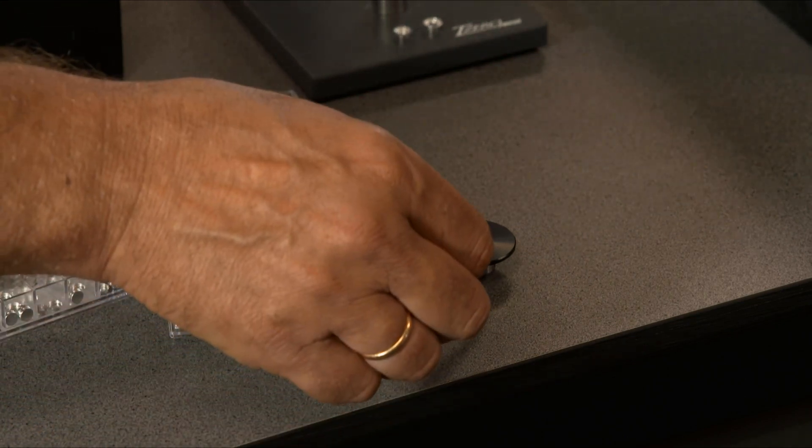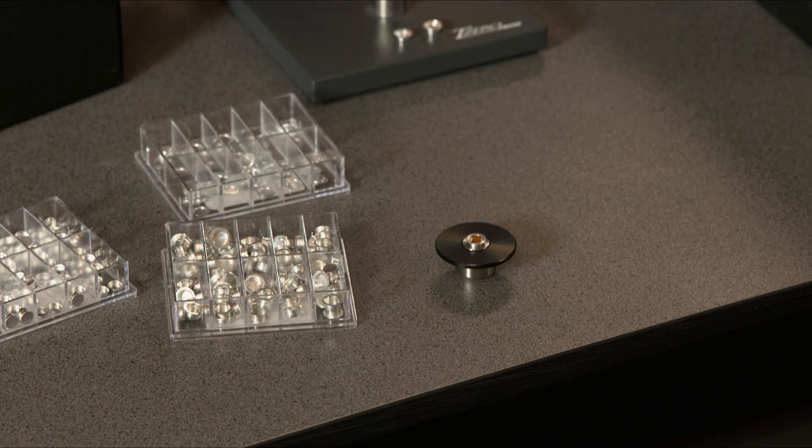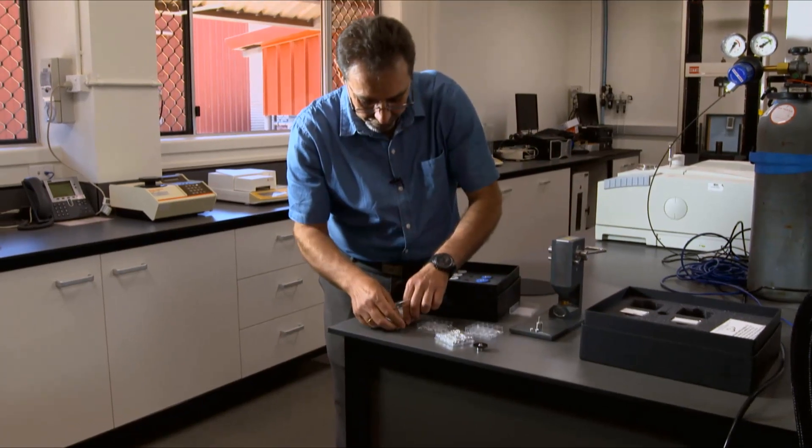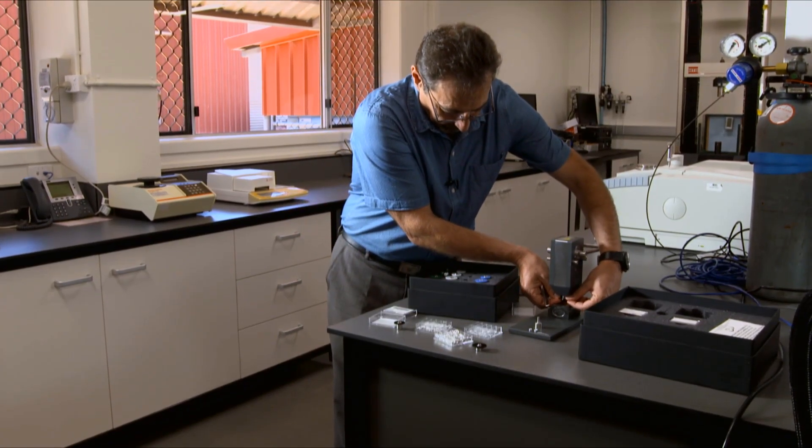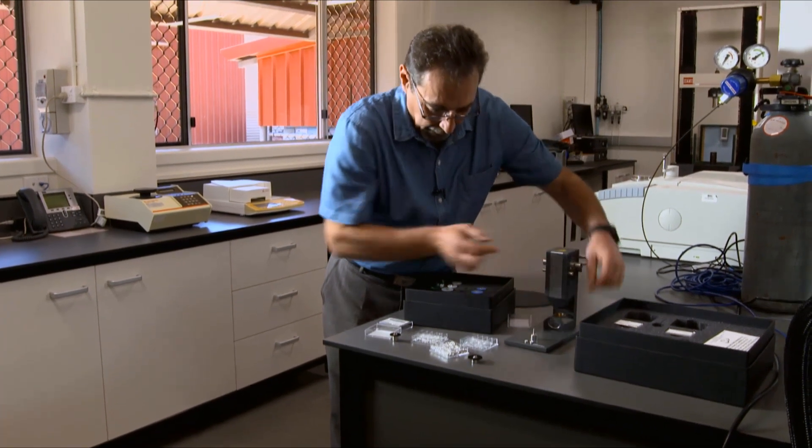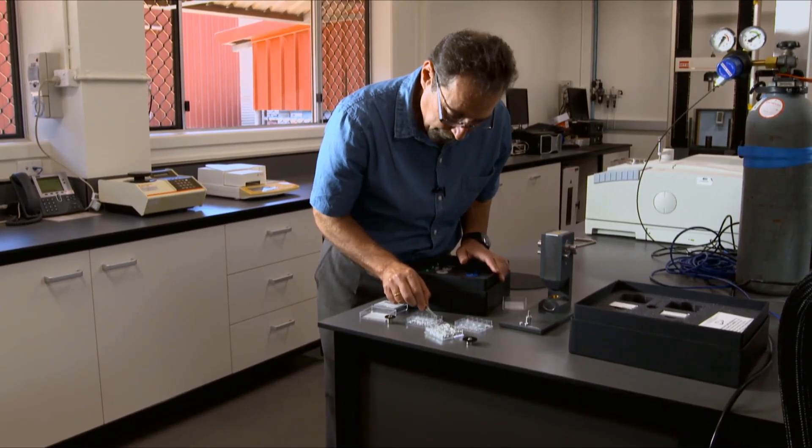And then you can crimp it. In this case, we are going to use another type of die. Put lid on.